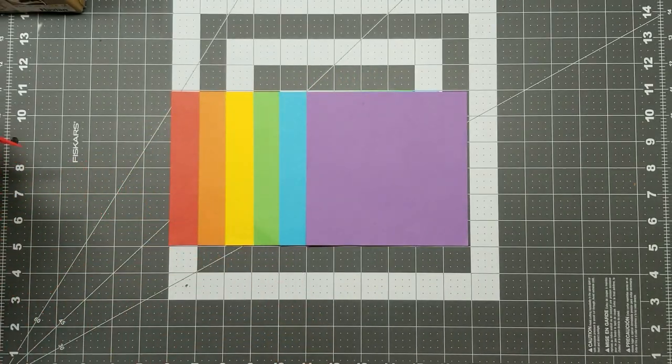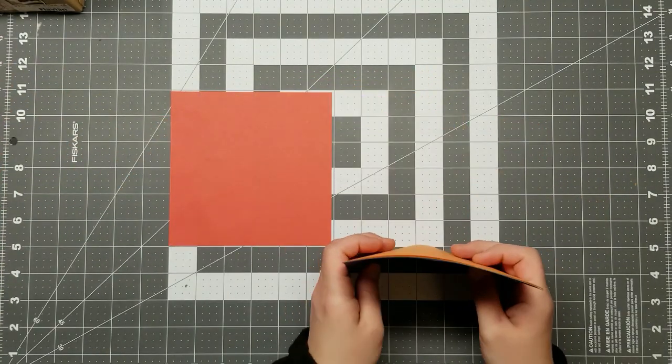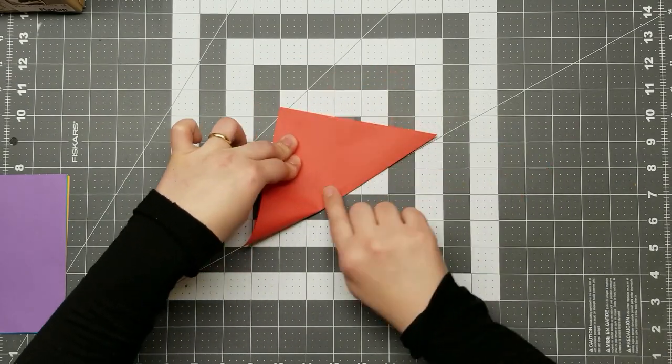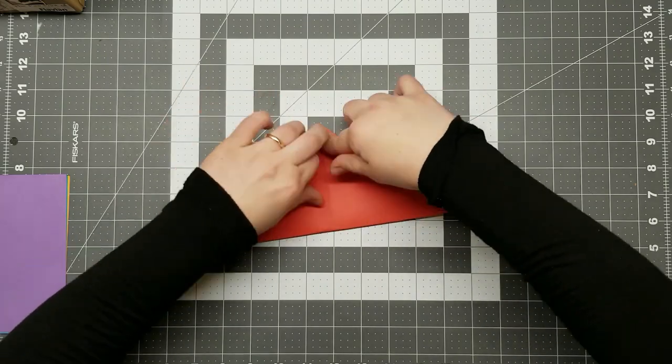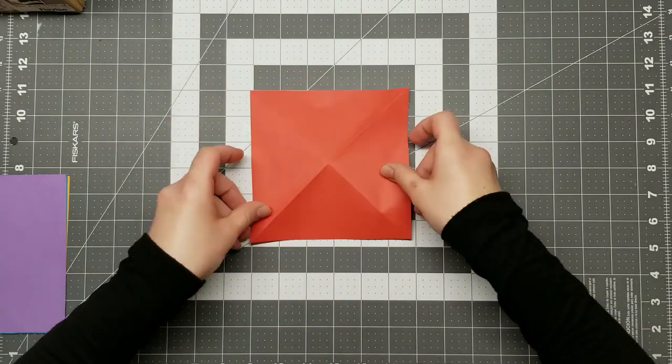The paper crane design is one of the oldest origami designs in existence. Invented in 105 AD in China, paper and paper folding eventually made their way to Japan in the 6th century thanks to Japanese monks.